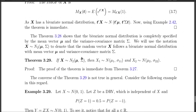A natural question arises: if X1 and X2 are both univariate normal, does this imply that the vector (X1, X2) is bivariate normal? The answer is no, not true in general. We give a counterexample.